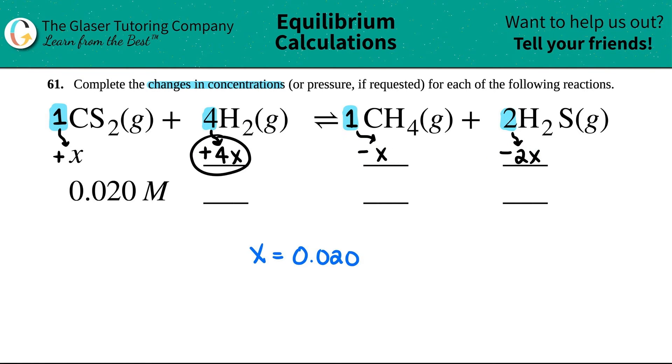Technically, this would be plus four times 0.020. This is the same as X, but it's just a negative. So we can automatically just tackle this one. This would be minus 0.020 molarity. And then this one would be minus two times 0.020.